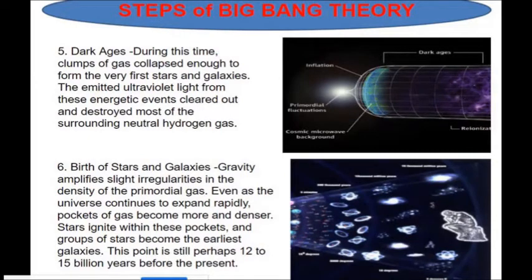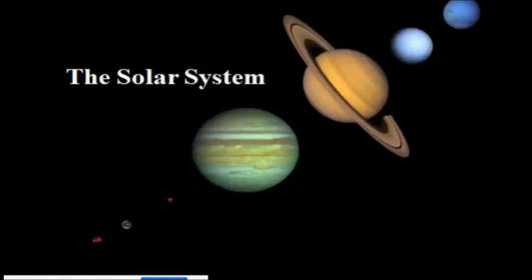And the last step of the Big Bang theory, it's called the birth of the stars in the galaxy. So, this gravity amplifies a slight irregularities and density of the primordial gas. Even as the universe continues to expand rapidly, the packet of gas becomes more denser. So, the stars ignite within this packet and the group of stars become the earliest galaxy. So, this point is still perhaps 12 to 15 billion years ago and until the present. So, that is the steps of the Big Bang theory.